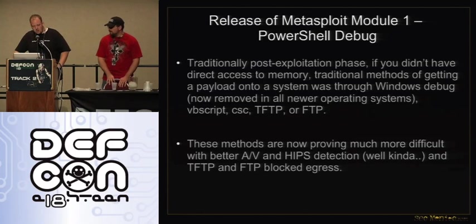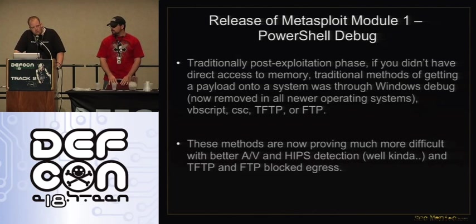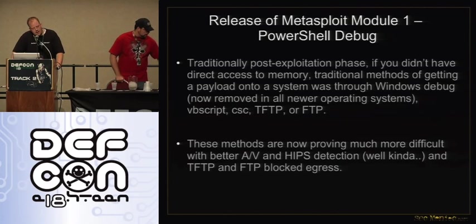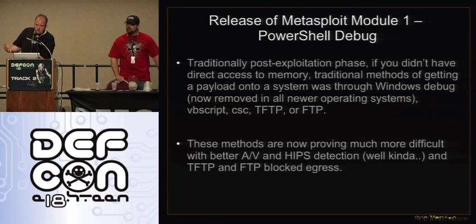So, Metasploit module release number one. In FastTrack, when doing SQL injection through MS SQL or finding a weak SA account, what we're doing is taking a binary, converting it to hexadecimal, and using the xp_cmdshell stored procedure to write that hexadecimal representation of the binary to the underlying operating system. Anyone here actually use FastTrack and that part of it?